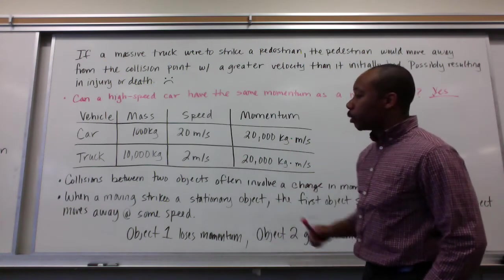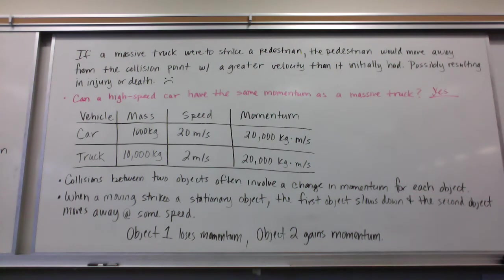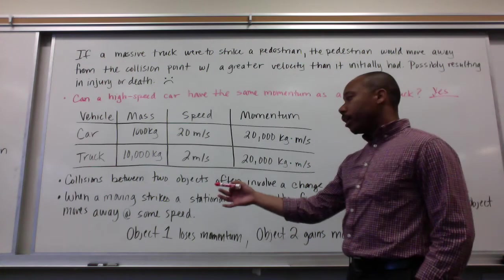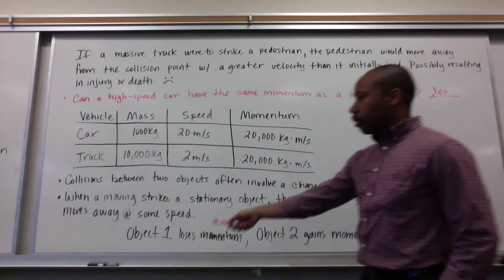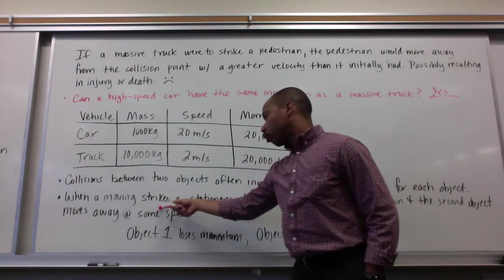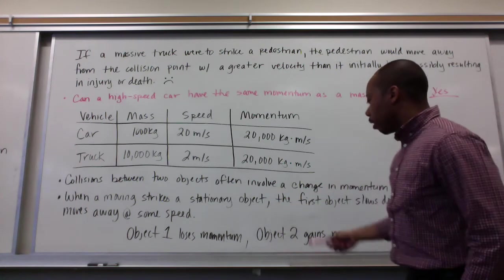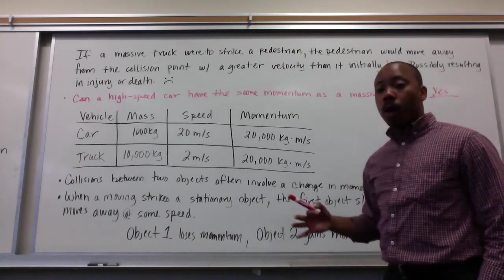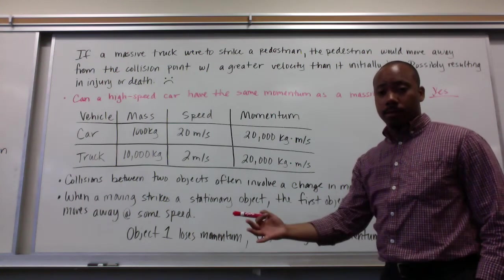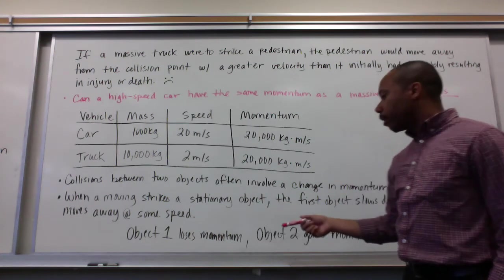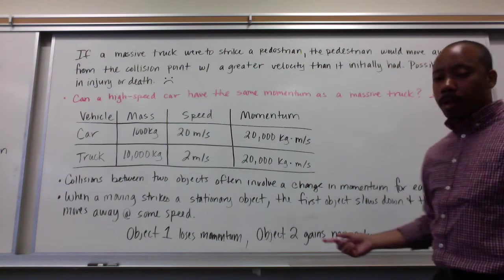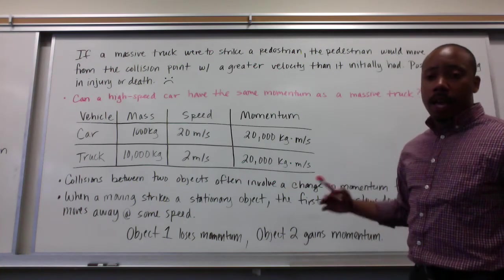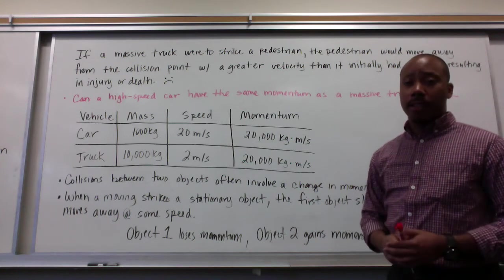Collisions between two objects often involve a change in momentum for each object. For example, when a moving object strikes a stationary object, the first object slows down and the second object moves away at some speed. Object 1 loses momentum while object 2 gains momentum. In our next lesson, we're going to talk about changes in momentum and how we represent that mathematically.